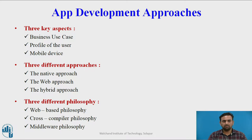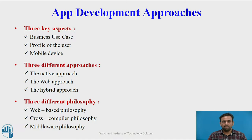Second aspect is the profile of the user. Every user should produce his own profile in the app — for example, the consumer, agent, partners, executives, etc. And the third aspect is the mobile device — that is, the type of mobile device, the device connectivity, and the platforms used on the mobile.